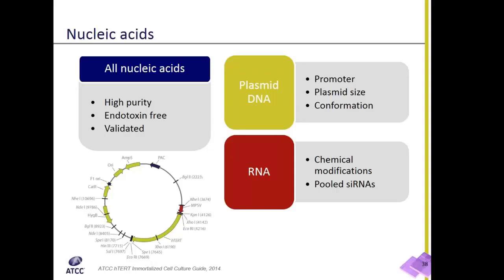For RNA interference, it is a good idea to use pooled siRNAs instead of a single sequence. This will allow for more efficient knockdown and less off-target effects.